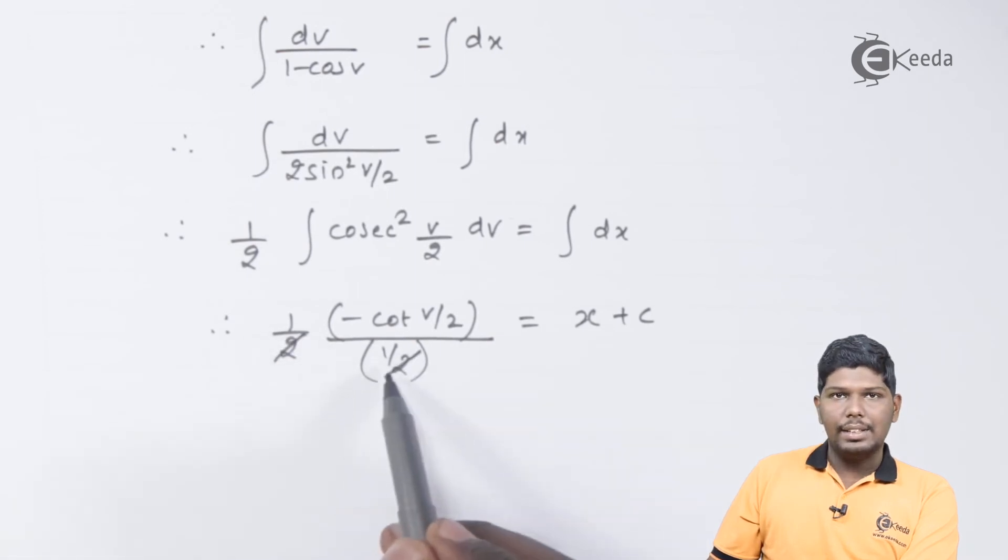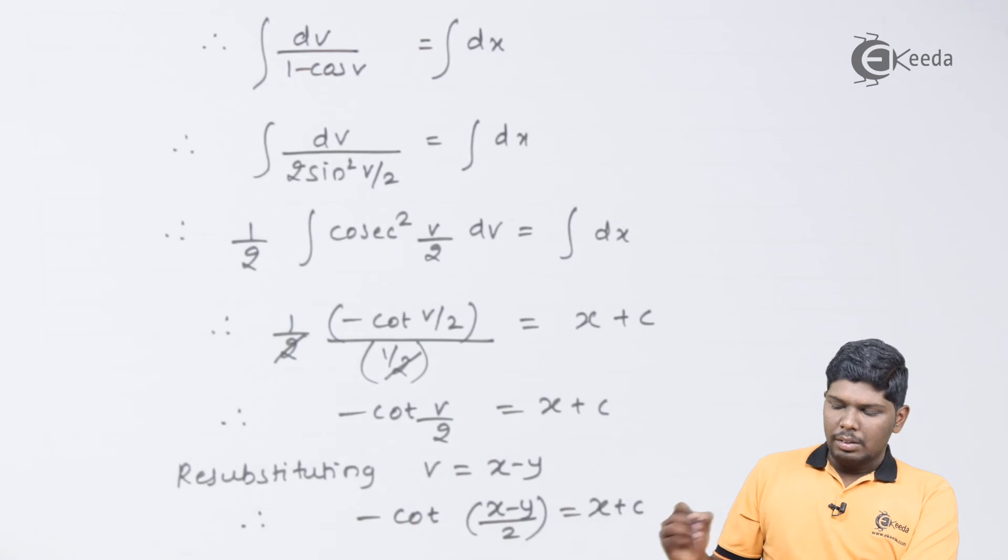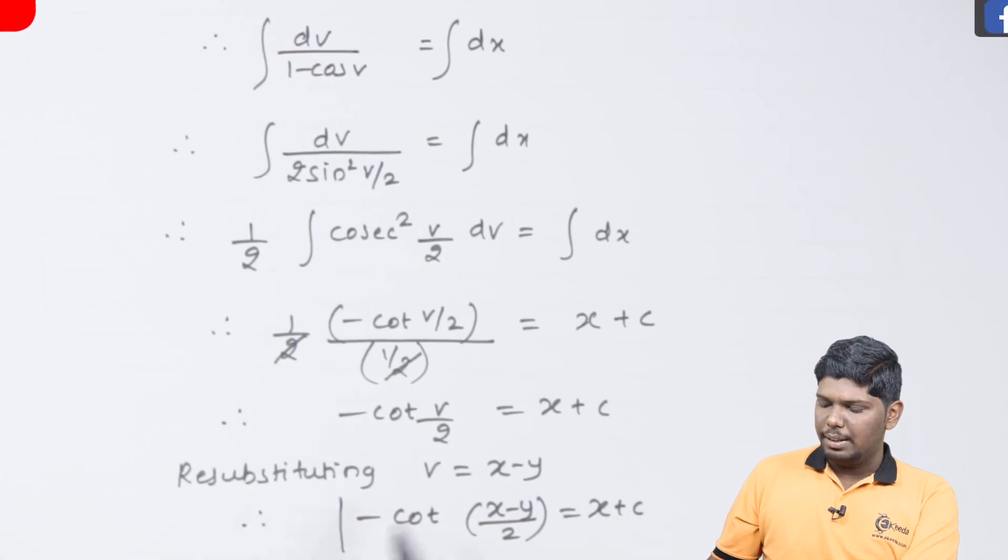As you can see, 2 will be cancelled. And the remaining part will be minus cot v by 2 equals x plus c. The last step will be the resubstitution of the value of v. So the final answer will be minus cot of (x - y) upon 2 equals x plus c.